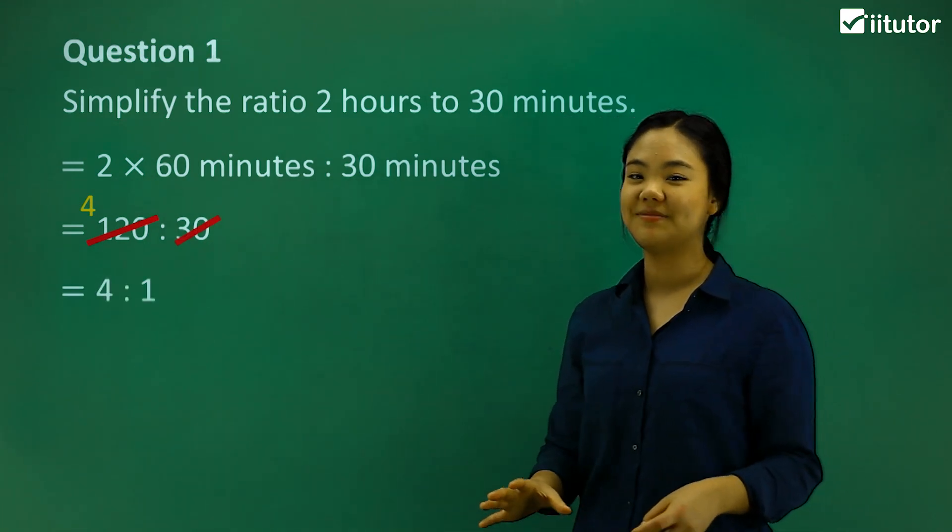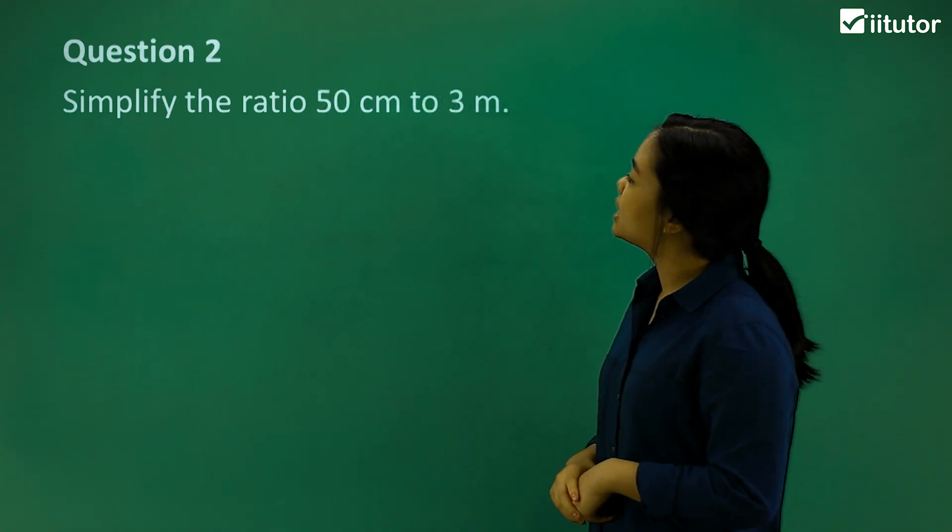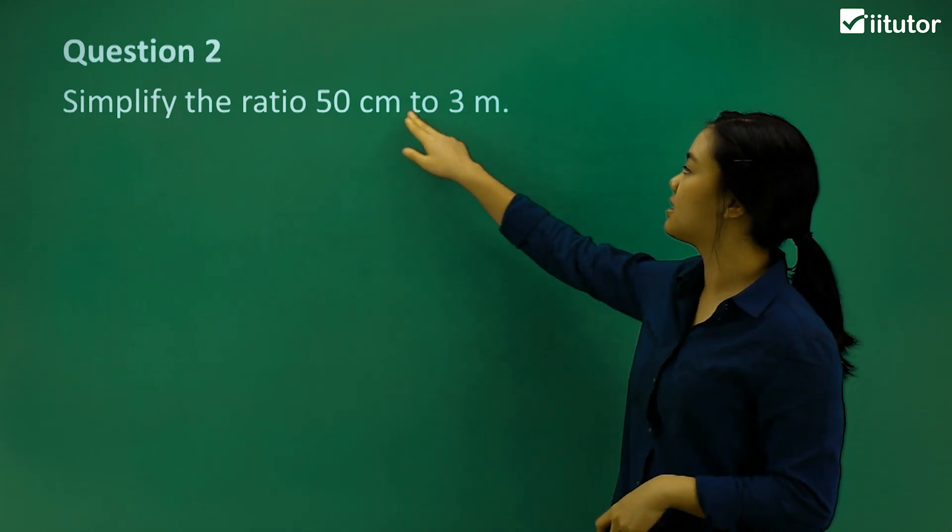Do we understand that? Okay, good. Let's try question 2. Simplify the ratio 50 centimeters to 3 meters.